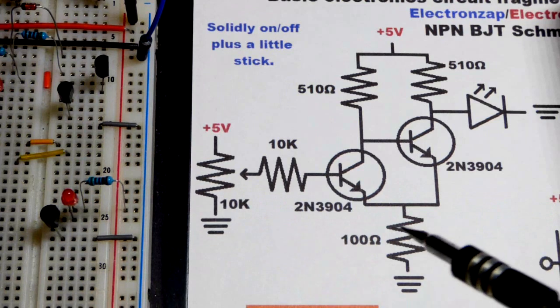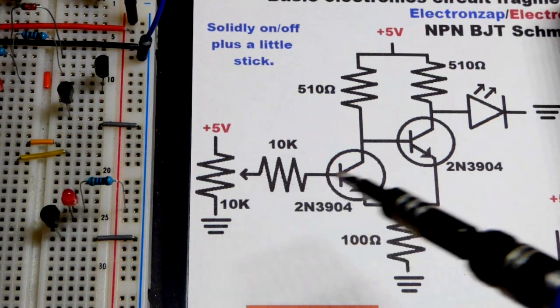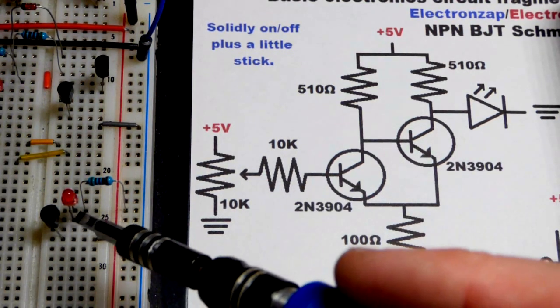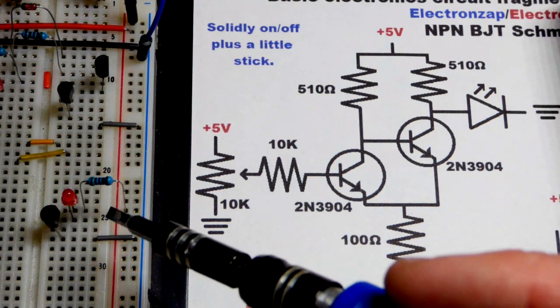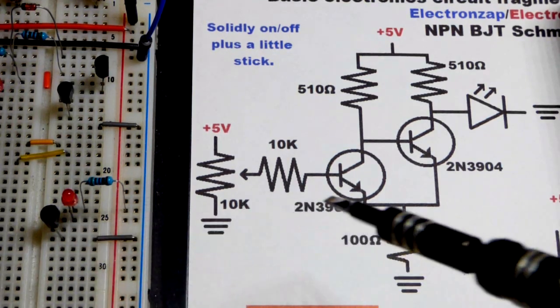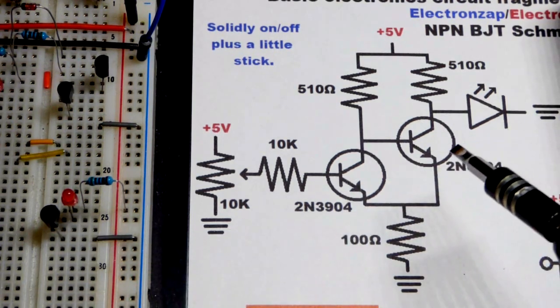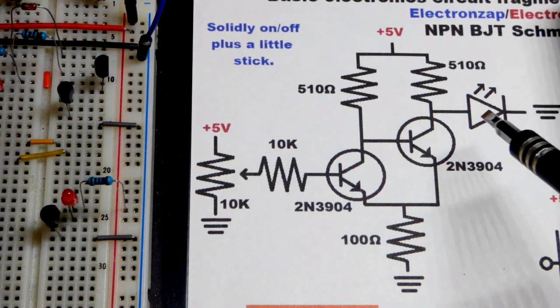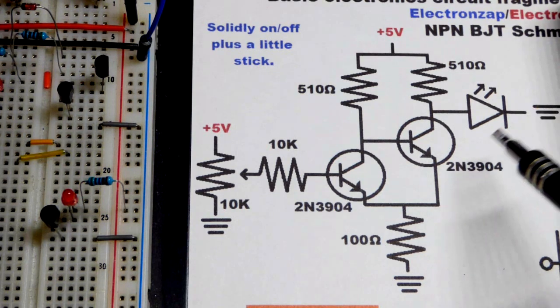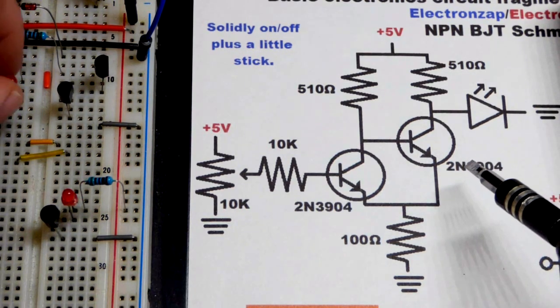So now I took apart the circuit, we'll do a step by step build. Over here is just the NPN bipolar junction transistor switch I did in earlier videos, so we're not going to go into that one in this video.